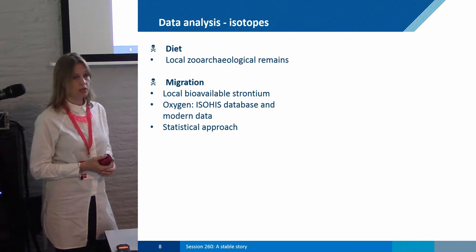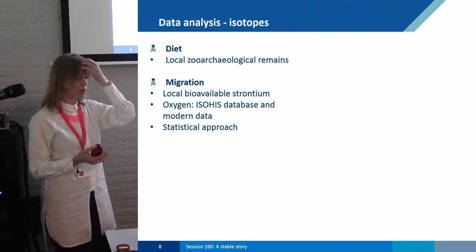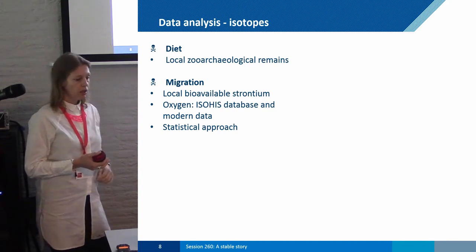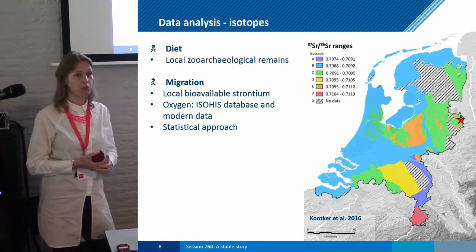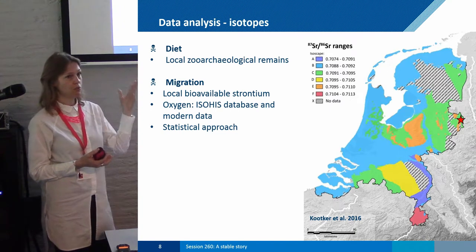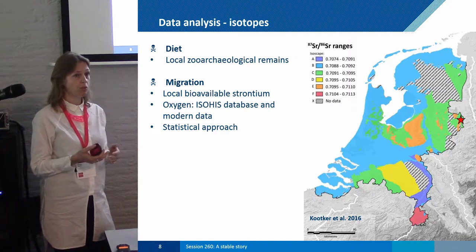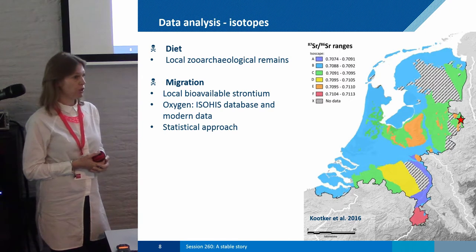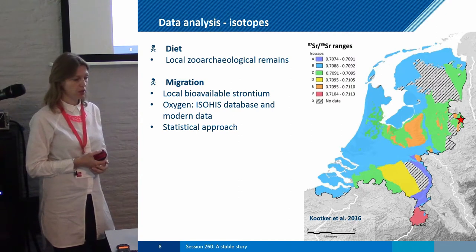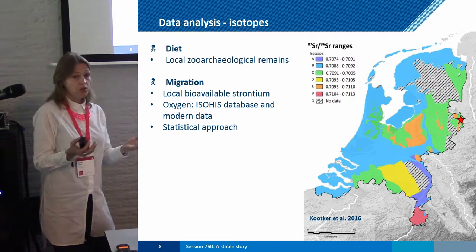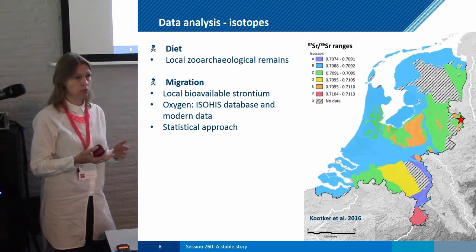For diet analysis, Lisette created a reference database for the local population based on local zooarchaeological remains. For migration, she used something quite remarkable: a map of local bio-available strontium ratios for the Netherlands. Of course, to know whether someone is local or not, you need to know what strontium ratios are available in different regions — and we don't have that for many regions yet, so having this is really a luxury. For the oxygen ratios, she used the ISOHS database and modern data, and because we had such a large population, we could also apply a statistical approach based on the average signal of our population and where the outliers fall.